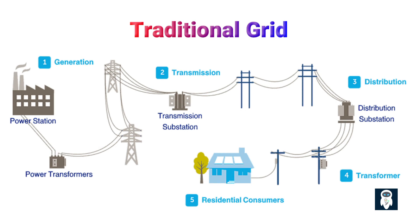In contrast, traditional grids face numerous challenges that hinder their efficiency and effectiveness. Lack of communication capabilities is a significant drawback — they cannot effectively monitor and control the flow of electricity, leading to inefficient distribution, wastage, and higher costs.